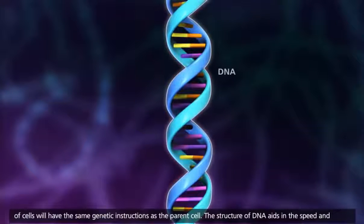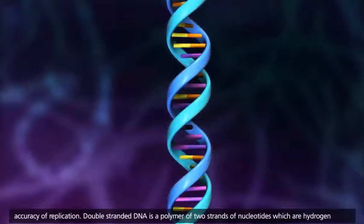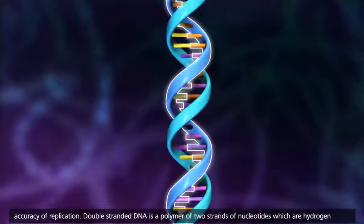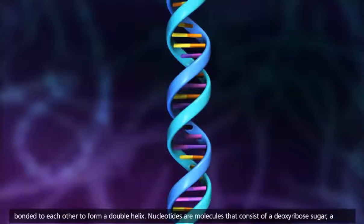The structure of DNA aids in the speed and accuracy of replication. Double-stranded DNA is a polymer of two strands of nucleotides which are hydrogen bonded to each other to form a double helix.